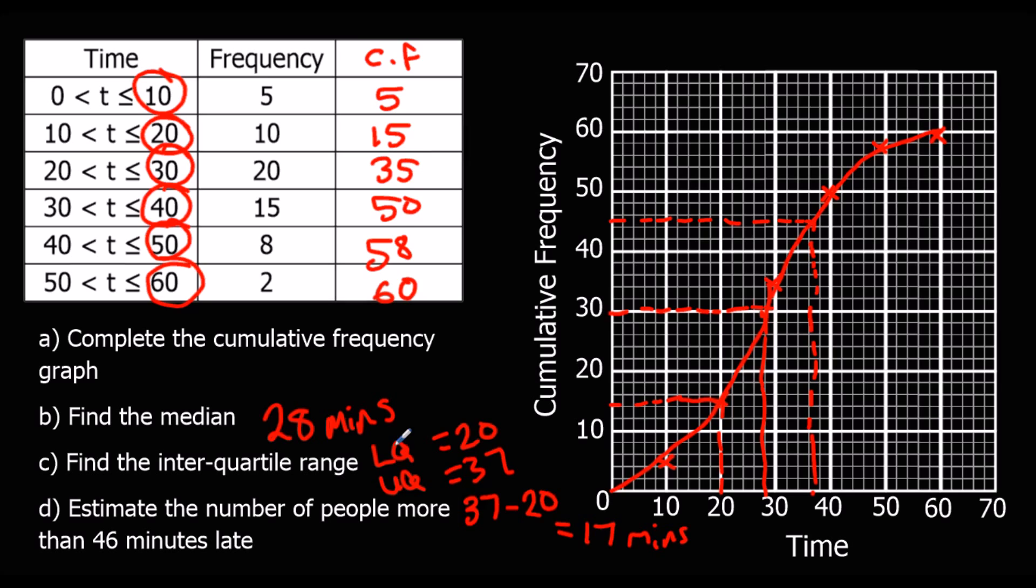The number of people more than 46 minutes late. So we're looking at 46 on the minutes. Up from there, meets there in the middle. And that's going to come out at 55 people. So 55 there. Was it more or less than? It was more than. So we want those people, which are those people. So that's five people.